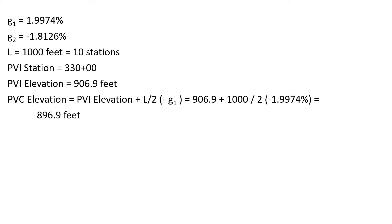We can also calculate the PVC elevation, which we know is important for determining the parabolic equation for this specific curve. That's the PVI elevation minus half the length times G1, which was 906.9 feet minus 500 feet times 1.9974%, which gives us a PVC elevation of 896.9 feet.